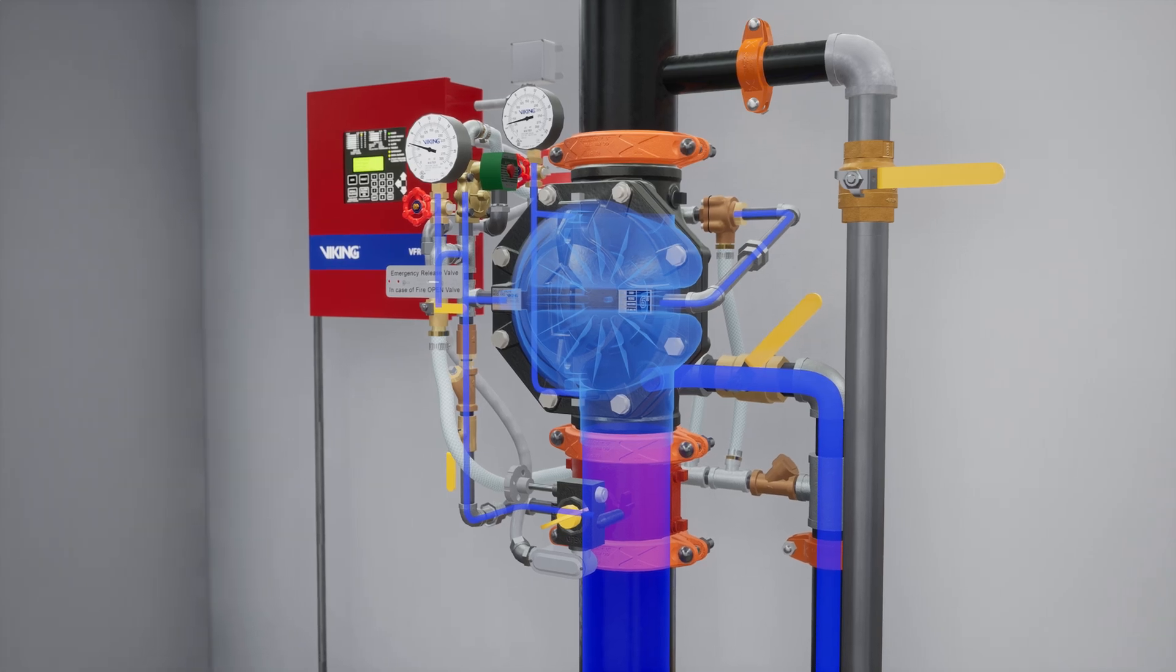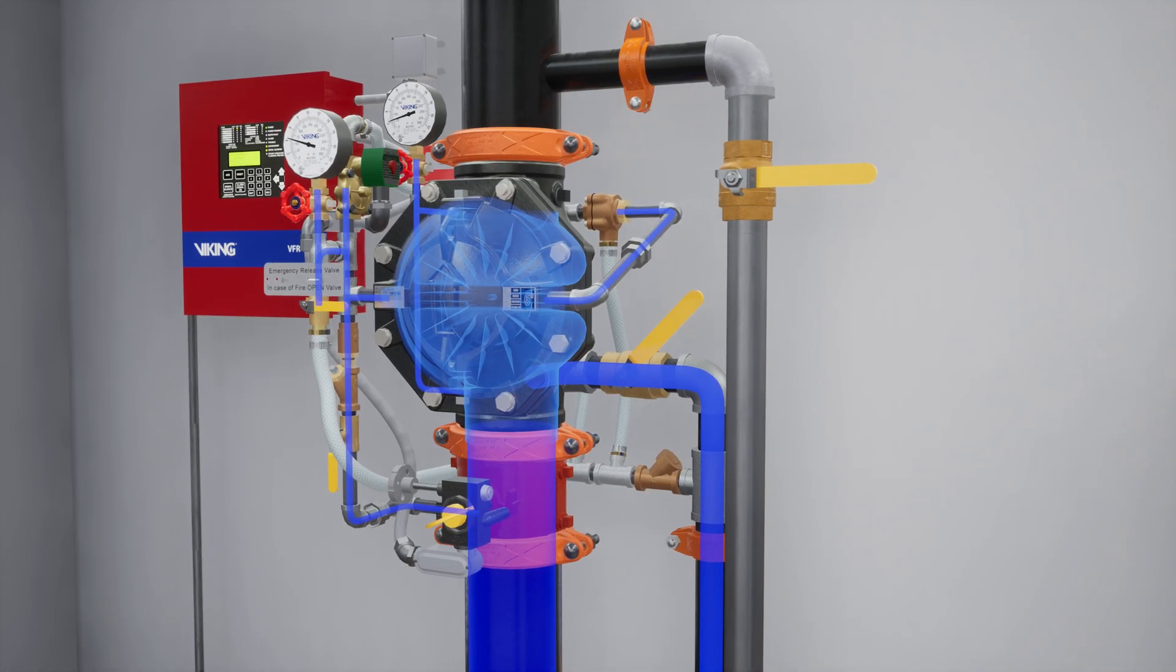Once water flow has been established, close the flow test valve. Opening the flow test valve purges any water from the inlet chamber of the VXD valve.